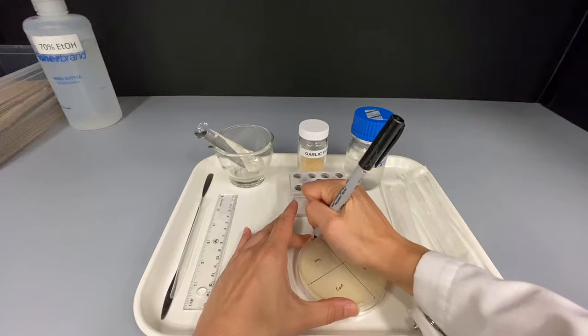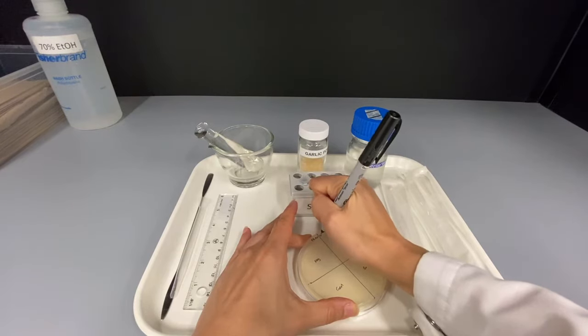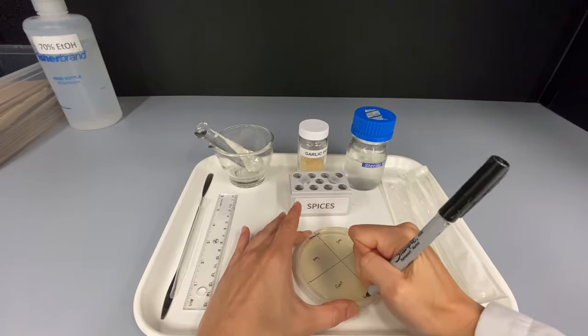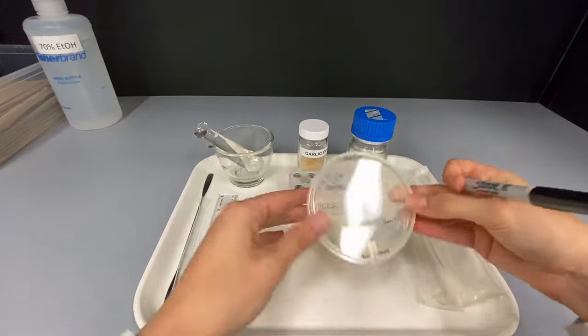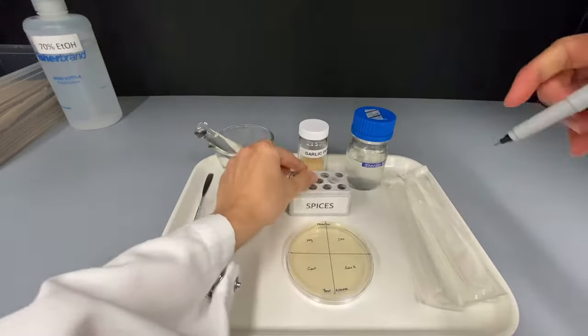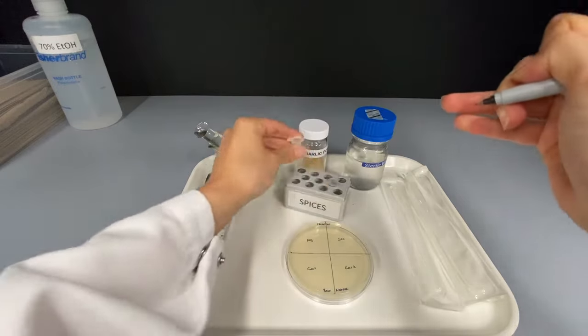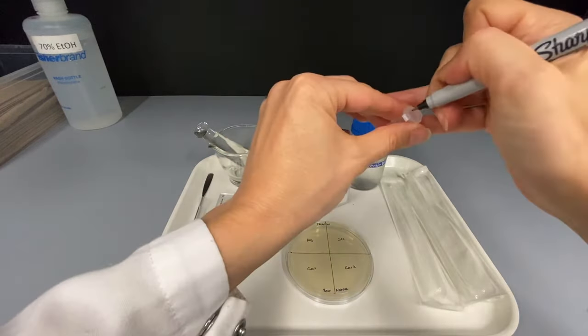You also need to write your practical number and your name on the underside of the plate. Keep these labels small and around the outer edge of the plate. Label the tubes GAR1 and GAR2.